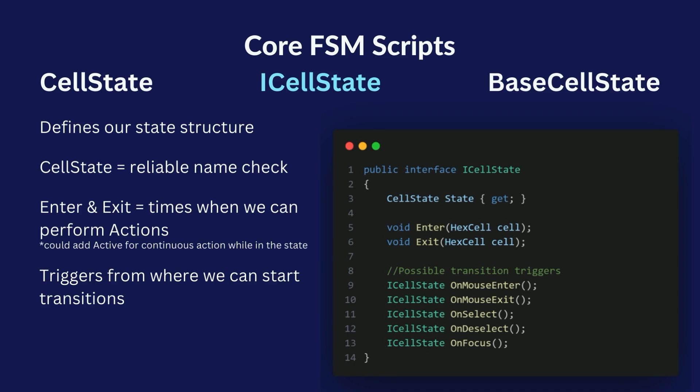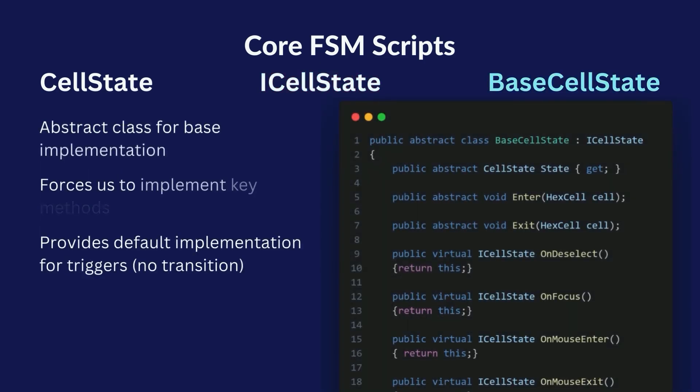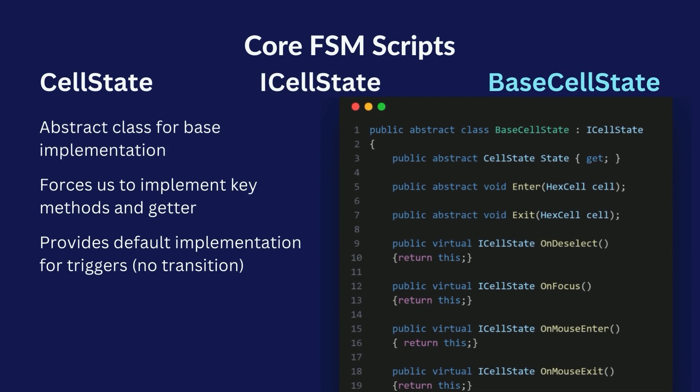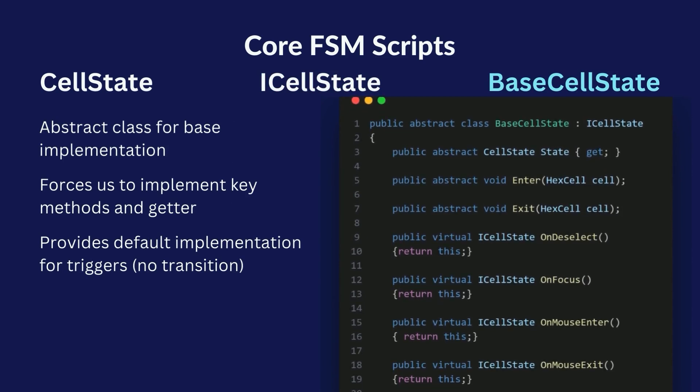This allows us to perform an action when we enter a new state and when we exit it. We could also add a stay or active method to perform actions continuously when in a state. The events equally represent only what I could currently think of — you could add more possible events to trigger transitions from. Both actions and transition events could be further abstracted into their own classes, even into scriptable objects, to be reusable and easily swappable in the inspector. Moving along, we have an abstract class called BaseCellState which implements the interface. All actual states will inherit from this class, providing basic setup, forcing us to implement the state getter, enter and exit methods, while providing a default implementation for transition events — all set to not transition and stay in the same state by default. This way we don't have to repeat ourselves in concrete state classes and are forced to implement key methods, making us less likely to miss something.